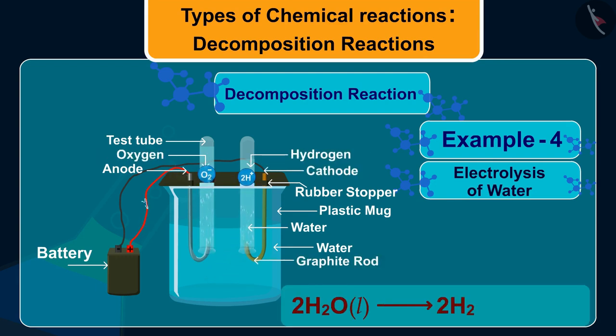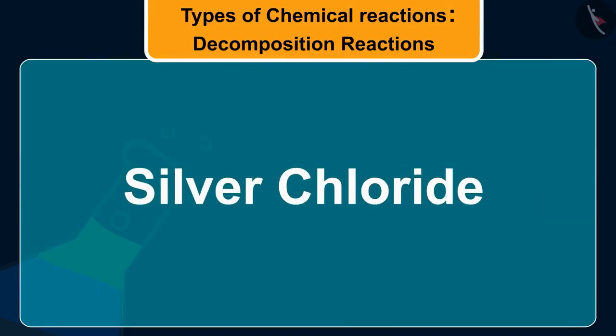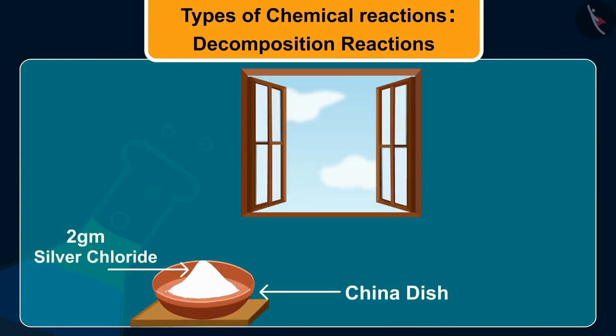Decomposition of silver chloride is another interesting example of decomposition reaction. To perform this reaction, place a small quantity of silver chloride AgCl in a watch glass under sunlight for some time. The crystals slowly acquire a grey color. This is because the sunlight has caused decomposition of silver chloride into silver and chlorine.